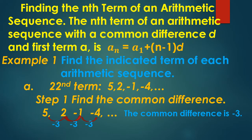Finding the nth term of an arithmetic sequence. The nth term of an arithmetic sequence with a common difference D and first term A is: A sub n is equal to A sub 1 plus open parenthesis n minus 1 times D, close parenthesis.